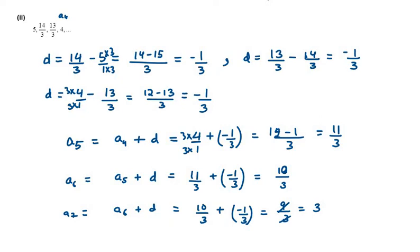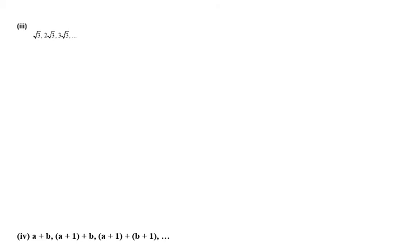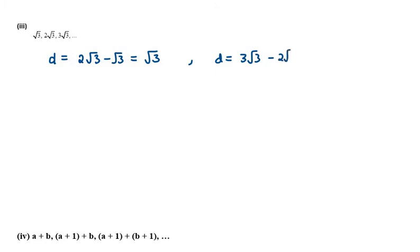Moving on to the third part. Let's check whether it is an AP or not. For A2 minus A1: it is 2√3 minus √3, which gives us √3. Now let's check A3 minus A2: it is 3√3 minus 2√3, which is again √3. So it is again an AP.